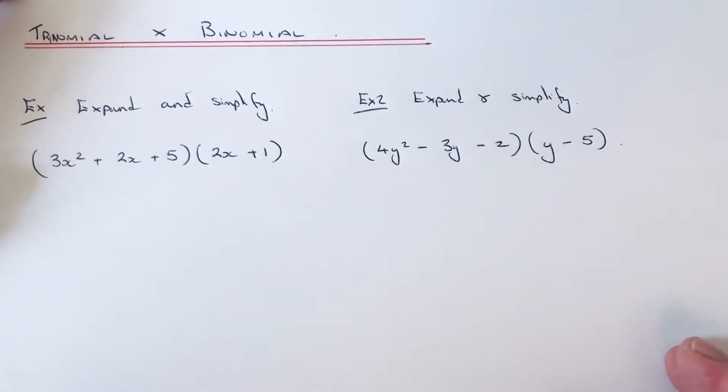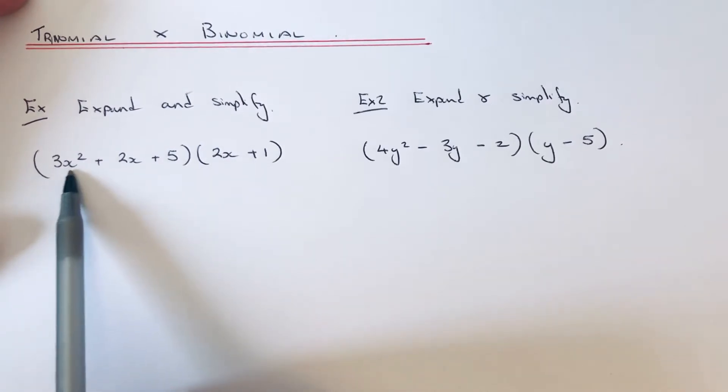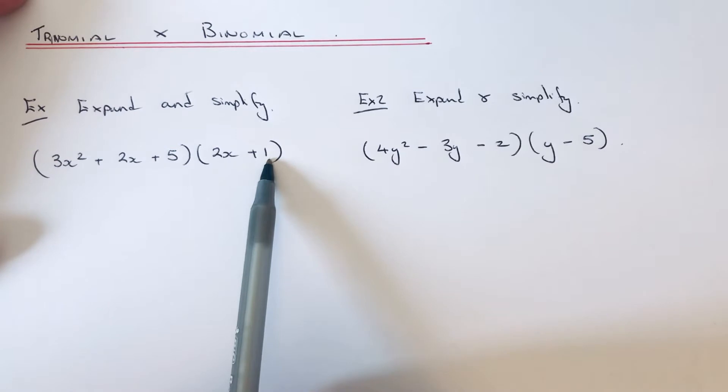Hi guys, welcome back. This is Maths 3000. Today I'm going to show you how to multiply a trinomial by a binomial. So a trinomial is an expression with three terms and we're multiplying it by a binomial with two terms.